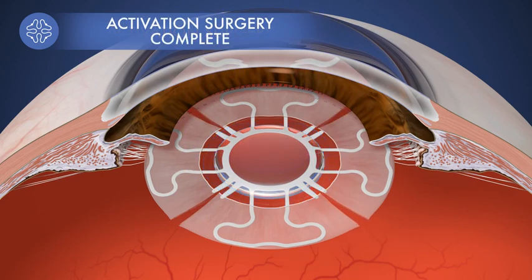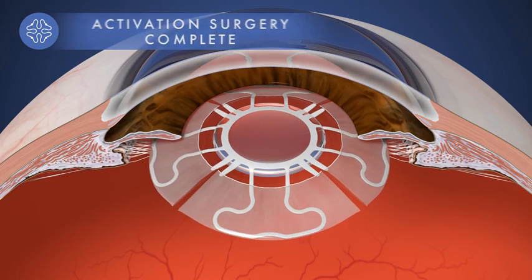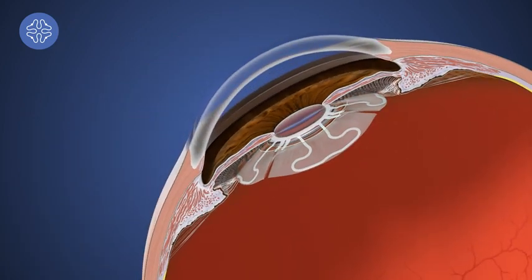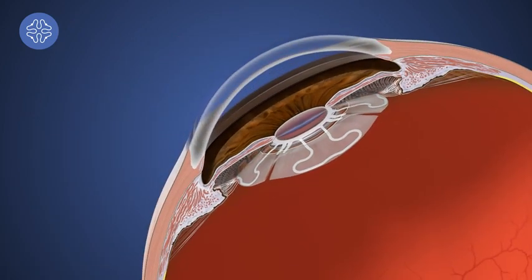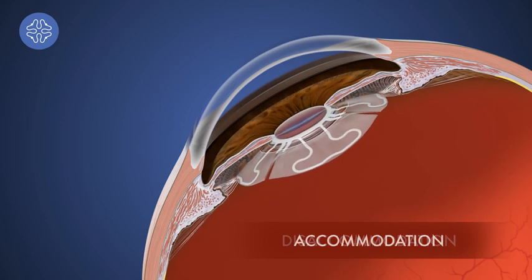After activation, the device will vault forward. Now that the IOL has been activated, it will mimic the movement of the natural lens by flattening out during disaccommodation and vaulting forward during accommodation.